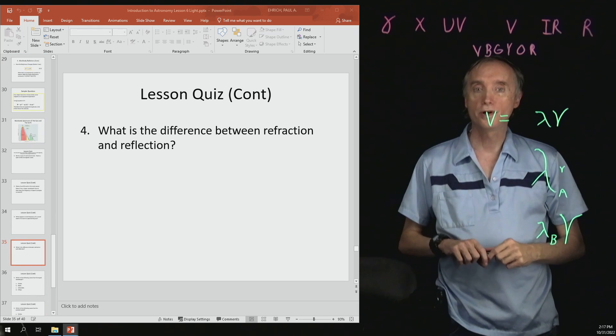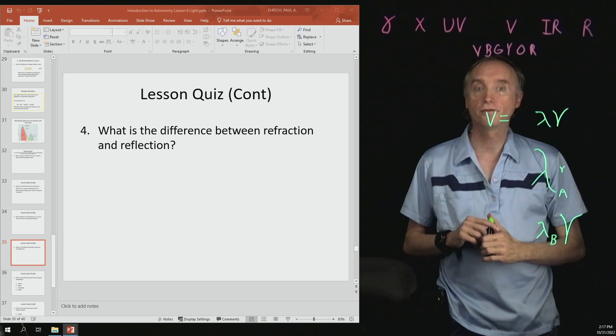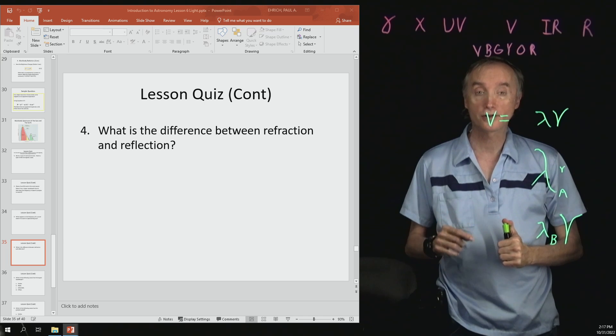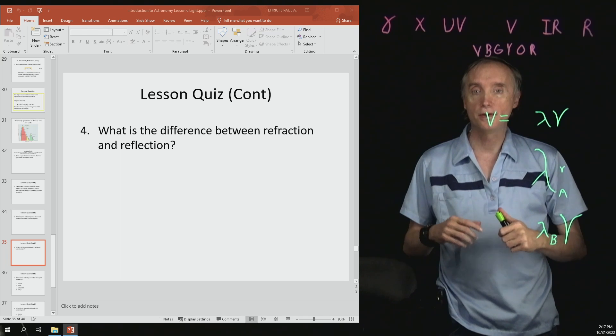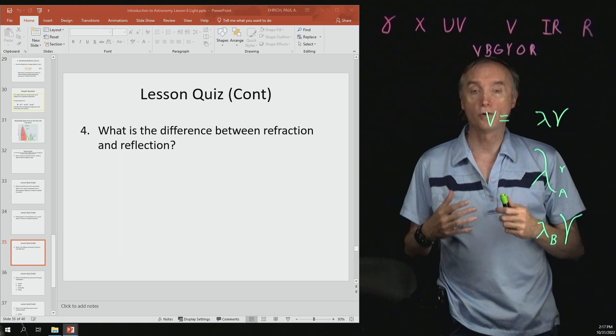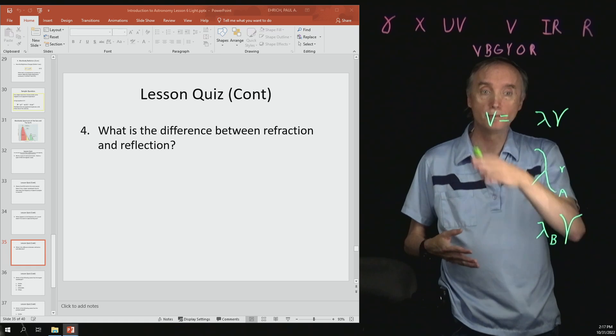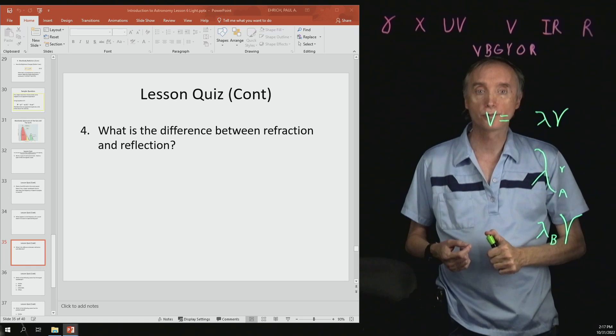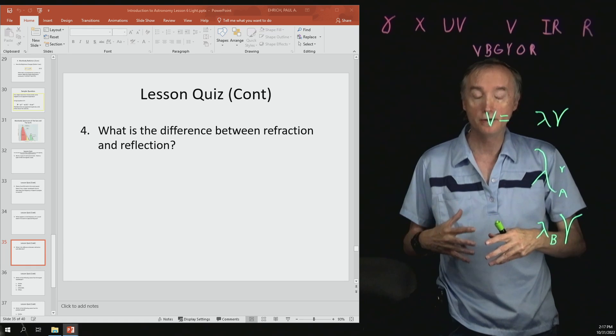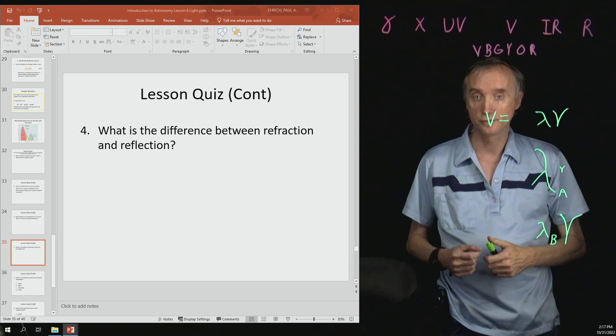Number four, what is the difference between refraction and reflection? Reflection, so it's going to be the bouncing of a wave or the changing direction of a wave. With reflection, it's bouncing off of, and then with refraction, it's bending because it's going through something.